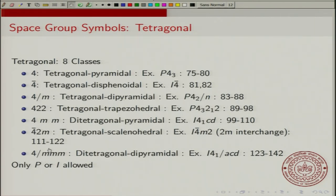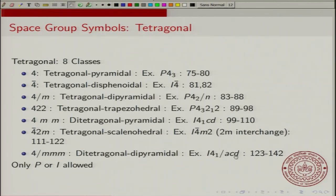For the 4/mmm di-tetragonal dipyramidal class, one example is I4₁/ACD: the first mirror perpendicular to the fourfold axis is an A-glide, the second and third mirrors are a C-glide and a diagonal glide. This class has nearly 20 space groups.